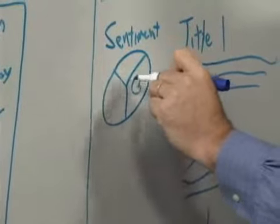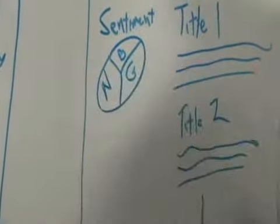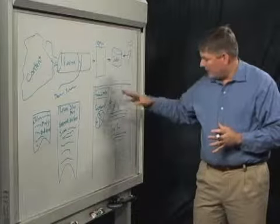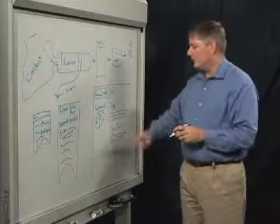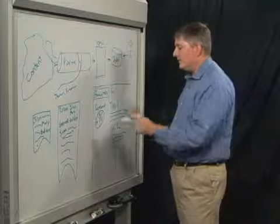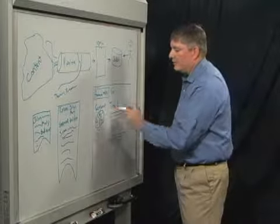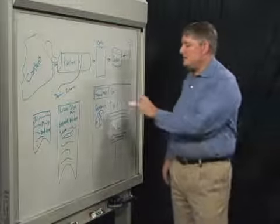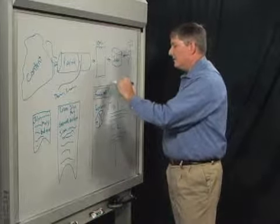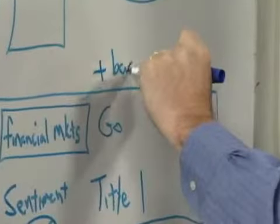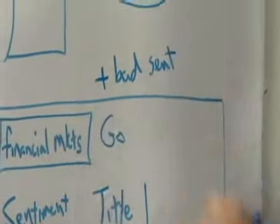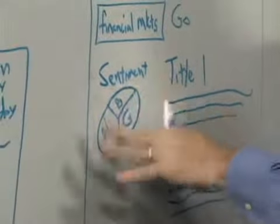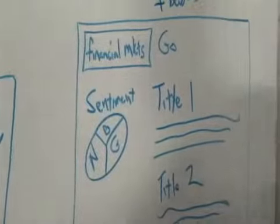So you may have a sentiment pie chart here with good, bad, neutral content. Now, in that content, you've got results for financial markets. You get the pie chart. You say, geez, I'm really curious about the bad news in the financial markets. So what that actually causes, it essentially changes this query to financial markets plus bad sentiment. And you get a new set of results out of here. And now the pie chart would be essentially one big red block because it's all bad.